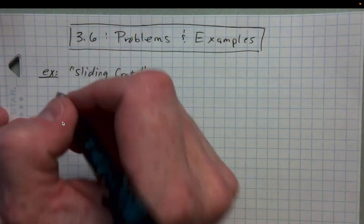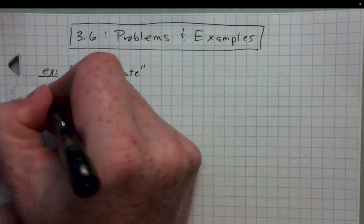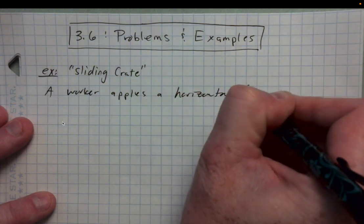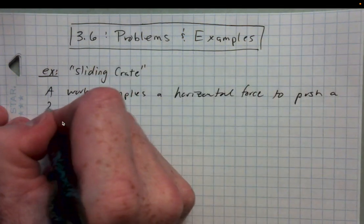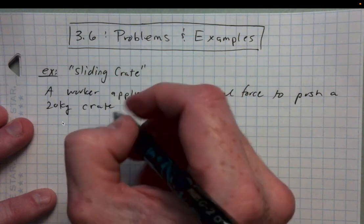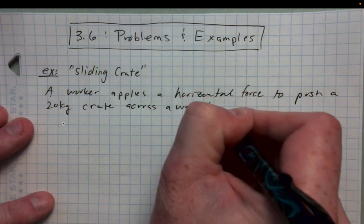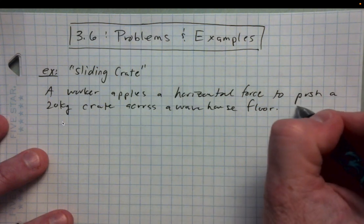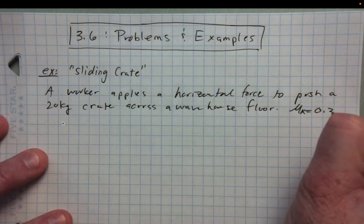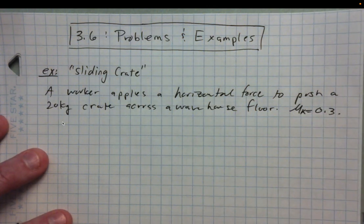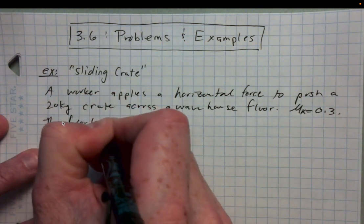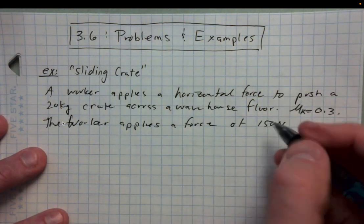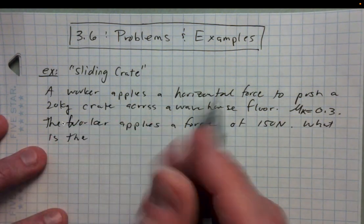Here's the first problem: a worker applies a horizontal force to push a 20-kilogram crate across a warehouse floor. The coefficient of kinetic friction is 0.3, and the worker applies a force of 150 Newtons. The question is: what is the crate's acceleration?